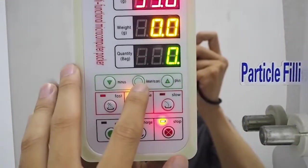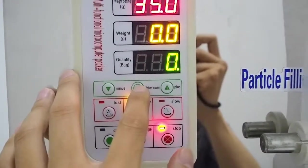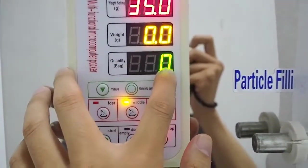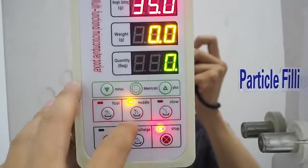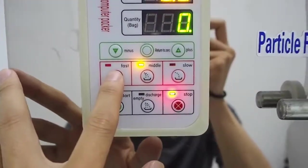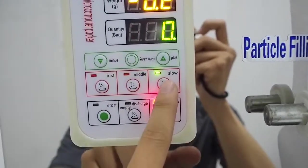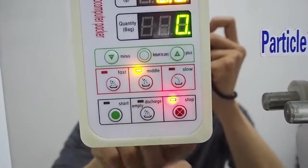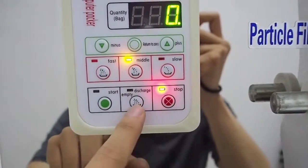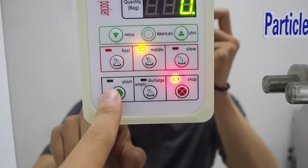And this button here is to reset the counter. So the counter is now zero. And this is the speed, the fast speed, the middle speed, the slowest speed. We can just use middle this time. And there is a start button.